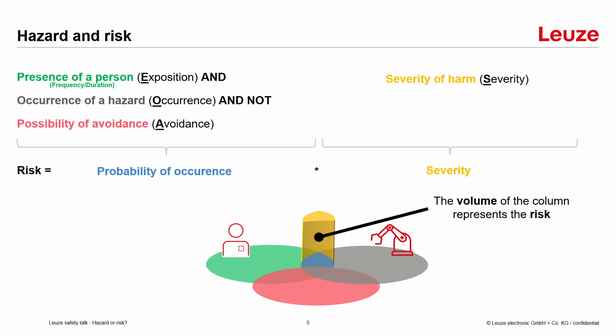The second part is the severity of the harm. If it's only a scratch, then it's a very low area. If it's very dangerous — for example, cutting off my arm — then it's a very high column. If we multiply these two things, probability of occurrence and severity, then we have our risk. The volume of the column represents the risk. The green area represents the person, and the gray area represents the occurrence of the hazard.